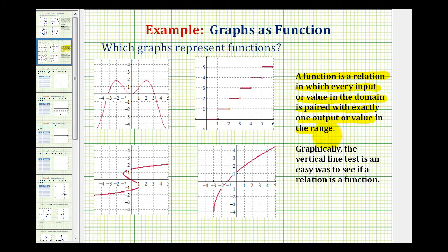To determine if a graph satisfies this condition, we can use something called a vertical line test. The vertical line test says if a vertical line intersects a graph in more than one point, the graph fails the vertical line test and therefore is not a function.